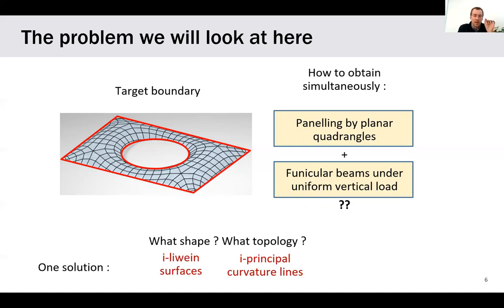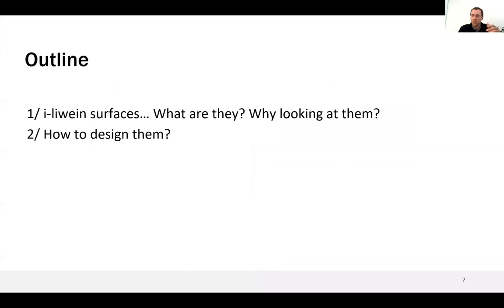we look at this solution. As shape, we will look at i-Weingarten surfaces, and for topology, we will look at the networks of isotropic principal curvature lines, that will make them i-principal curvature lines. So the presentation will be in two parts. First, we look at these i-Weingarten surfaces. What are they? Why do we look at them? In a second step, we look at how can we design and construct them.